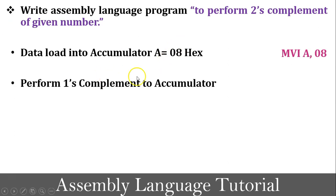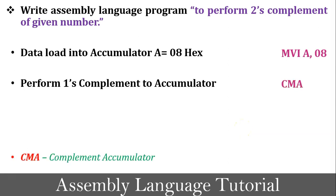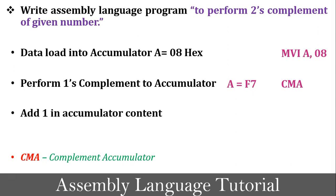The instruction for loading is MVI A, 08. The next task is to perform 1's complement on the accumulator content, so the instruction is CMA — complement the accumulator content. After execution of CMA, the accumulator content becomes F7. Since we need 2's complement, the third task is to add 1 to the accumulator content.